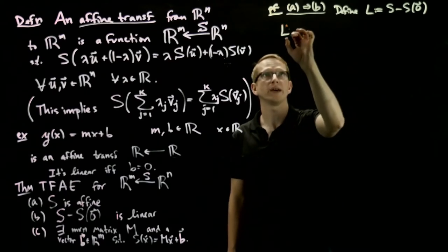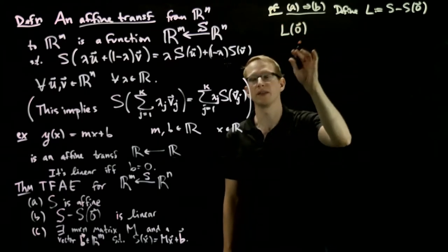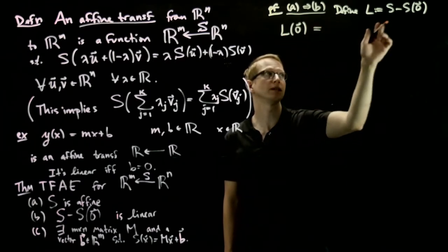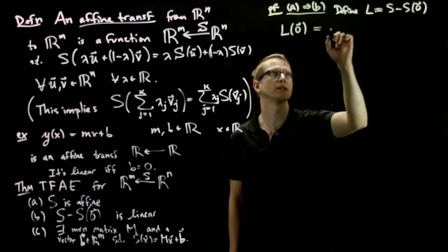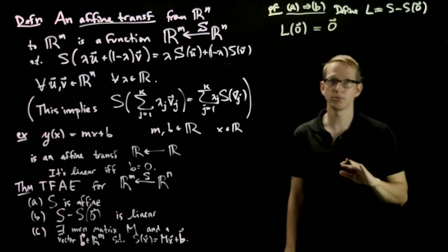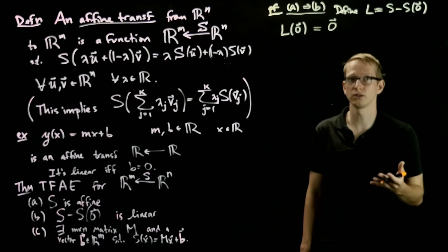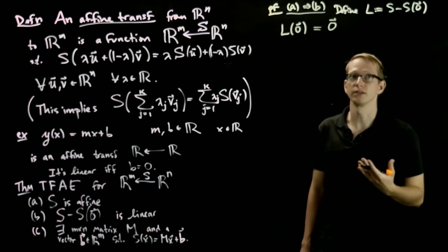Before we do that, let's just establish that if we apply L to 0, then we get exactly 0 because this is s(0) - s(0). So it definitely preserves 0. And we know that this doesn't give us a sufficient condition for linearity, but it's definitely necessary.